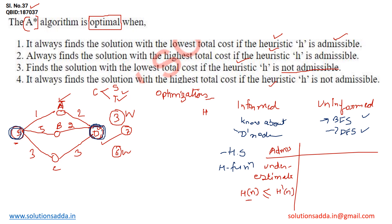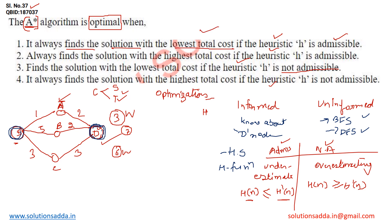In non-admissible heuristic search, we are overestimating — the estimated total cost is greater than or equal to the actual total cost. So this is all about heuristic search, admissible and non-admissible. The correct option for this question is that the A* algorithm always finds the solution with the lowest total cost if the heuristic used is admissible. So the correct option is option number 1.